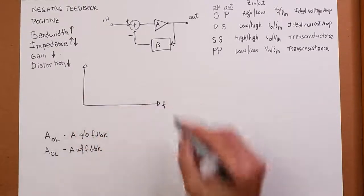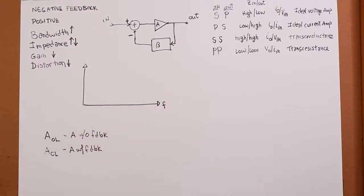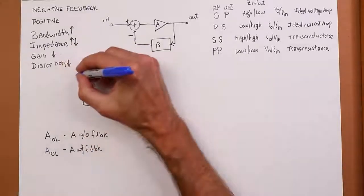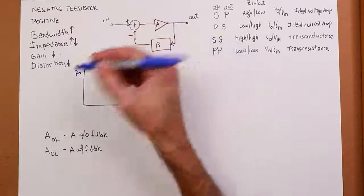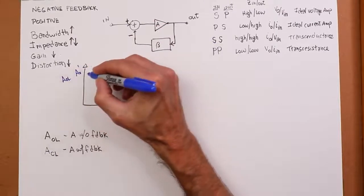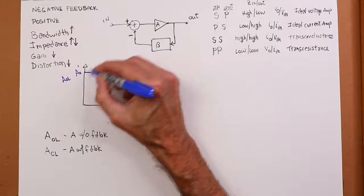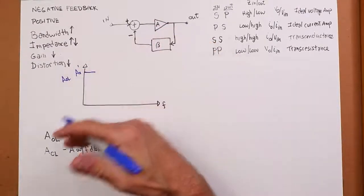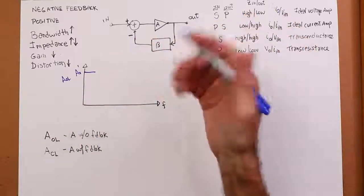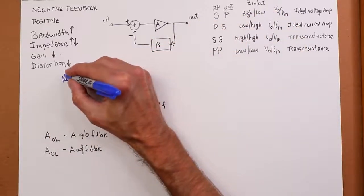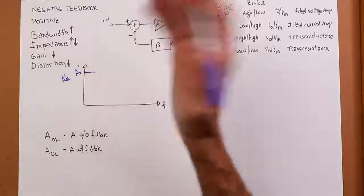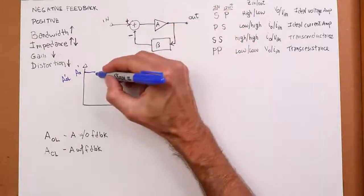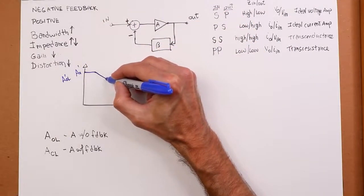A-CL is closed loop — gain with feedback. A-OL is gain without feedback, isolated. If we just plot the gain of the amplifier by itself for a typical op amp — here's our A open loop — we get something that starts high. We know it's high: it could be 100,000, 200,000, 300,000 — a big number, plotted in decibels, maybe 100 dB. Then it breaks off and starts to fall.